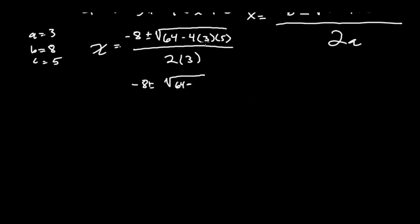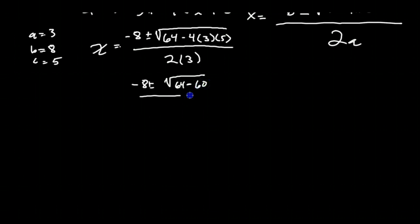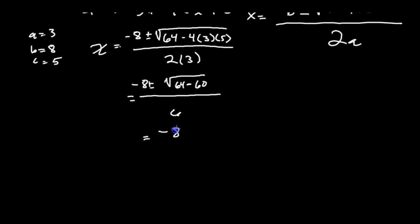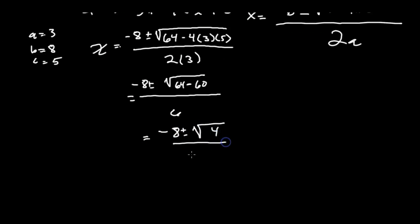4 times 3 is 12, and 12 times 5 is 60. And that will all be over 6. Now we can simplify 64 minus 60. So that will be negative 8 plus or minus the square root of 4, all over 6.